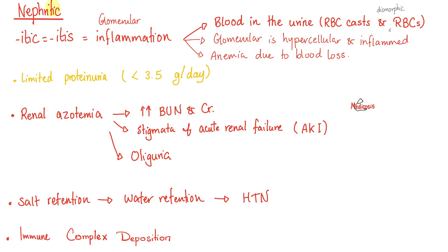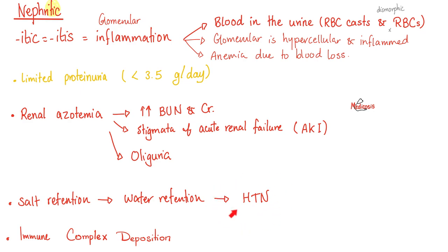The azotes are nitrogen compounds: BUN — blood urea nitrogen — and creatinine. When the kidney is toast, you get oliguria, which is the fifth vital sign in the hospital. If the kidney cannot get rid of salt and water, you get salt-water retention, hypertension, jugular venous distension, etc.